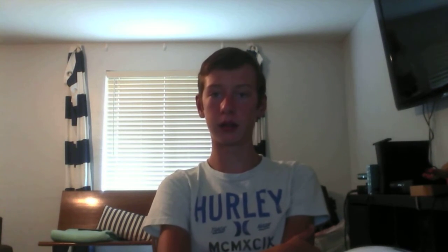Ubuntu 17.10 and below used the Unity desktop environment, and then Ubuntu 18.04 and up uses the GNOME desktop environment. Pretty much anything Ubuntu 16.04 and up is supported mainstream right now. Ubuntu 12.04 Precise Pangolin and Ubuntu 14.04 Trusty Tahr are now in extended maintenance, so you can sign up to get extended security maintenance — I think till 2021 for Ubuntu 14.04.